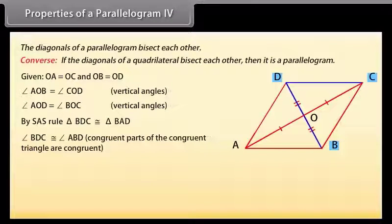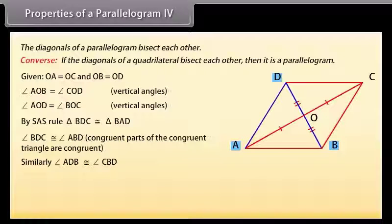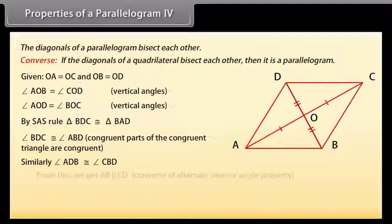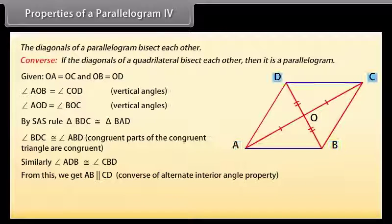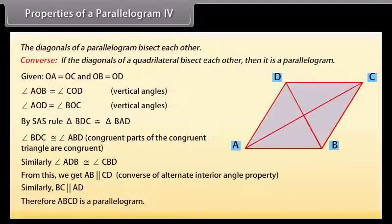Therefore angle BDC = angle ABD (congruent parts of congruent triangles). Similarly angle ADB = angle CBD. From this we get AB is parallel to CD. Similarly BC is parallel to AD, using the converse of the alternate interior angle property. Therefore ABCD is a parallelogram.